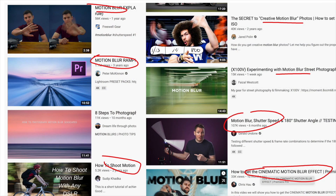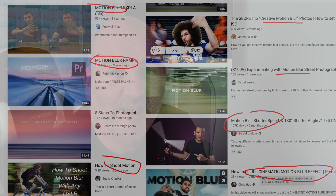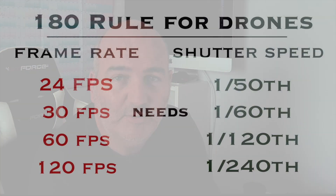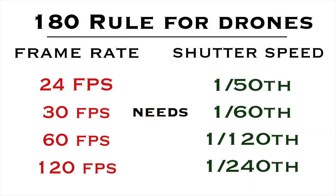The rule of 180 — in simple terms all it means is you're doubling the shutter speed compared to the frame rate. So if I'm shooting at 30 frames a second, I need a shutter speed of 1/60th. I use 30 frames a second for most of my filming, so my shutter speed should be 1/60th of a second.